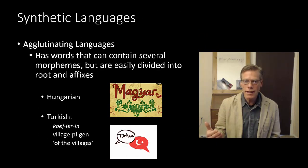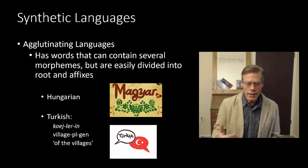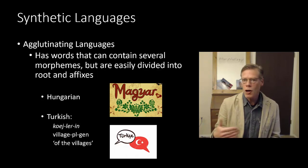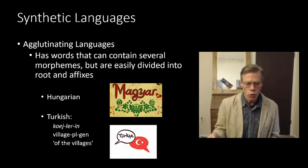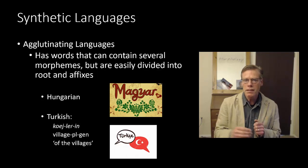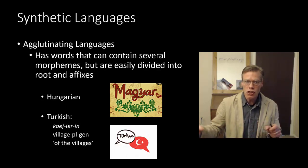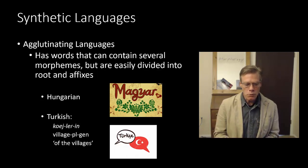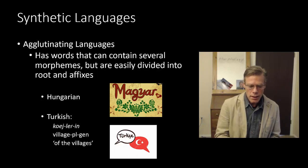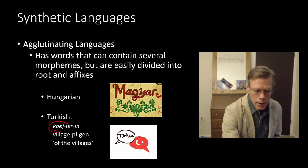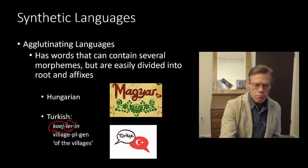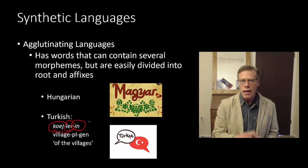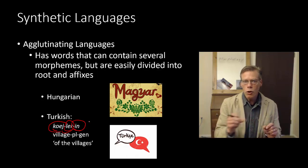We'll start with the agglutinating languages. These are the closest to the analytic languages. This is the case where many words — perhaps the majority of words — contain several morphemes, but the morphemes are easily divided into roots and affixes. It's easy to tell where one morpheme ends and the next begins; it's kind of like you're just gluing these affixes onto the root, hence the name agglutinating. Hungarian and Turkish are very good examples. In Turkish, looking at the word for 'of the villages,' we've got our root, and then we add the plural and the genitive — each morpheme boundary is clearly visible.